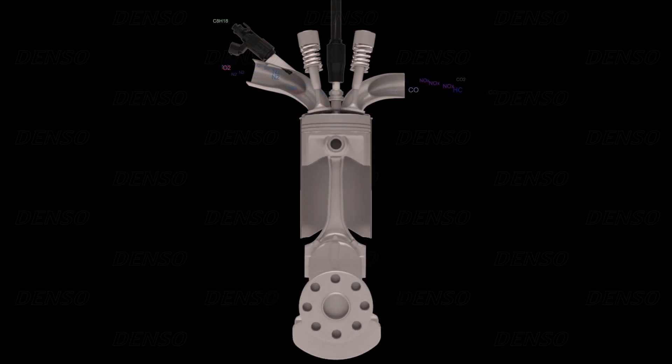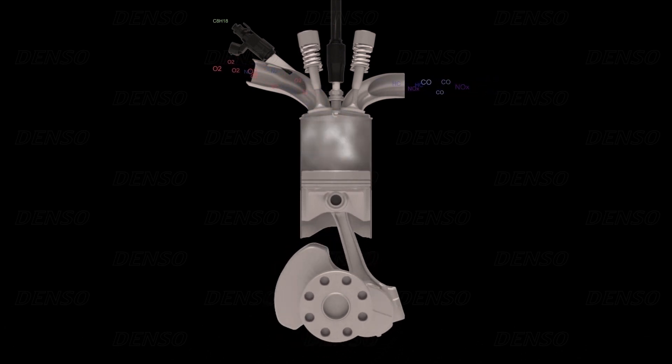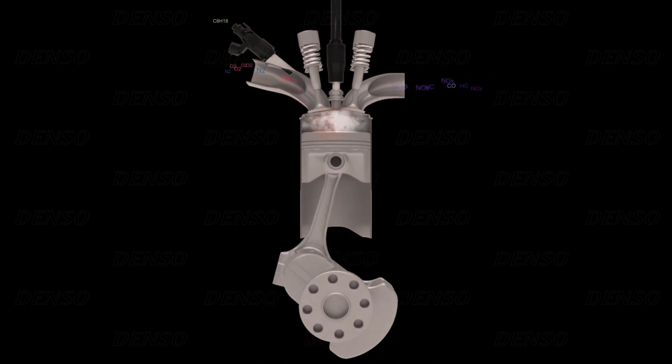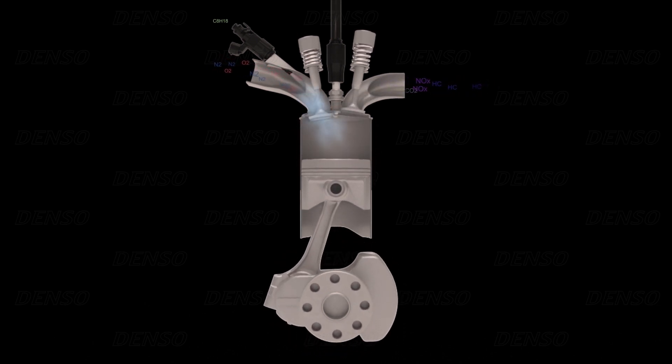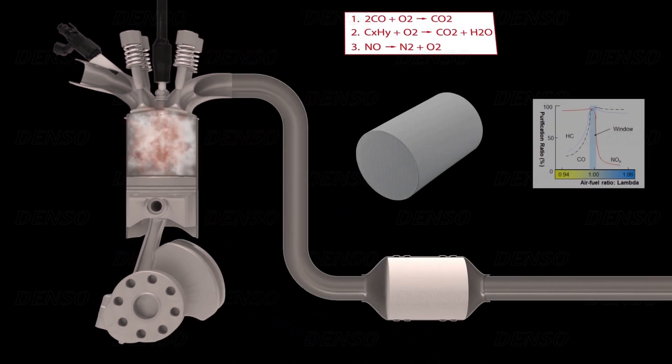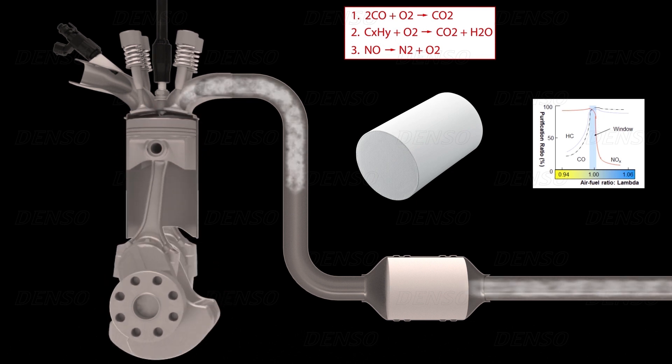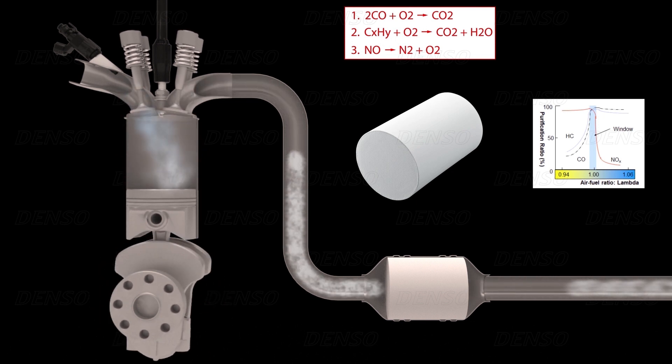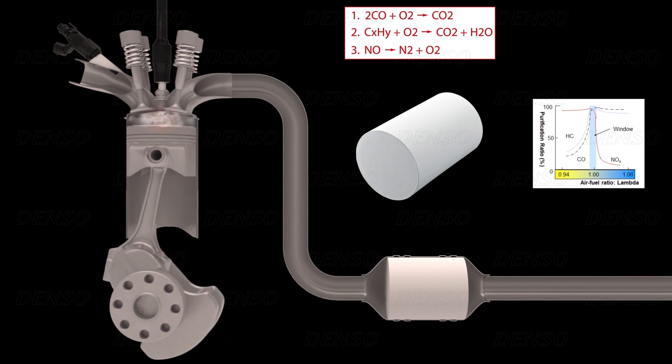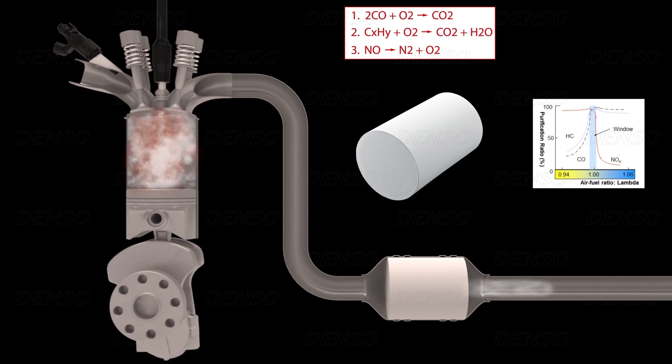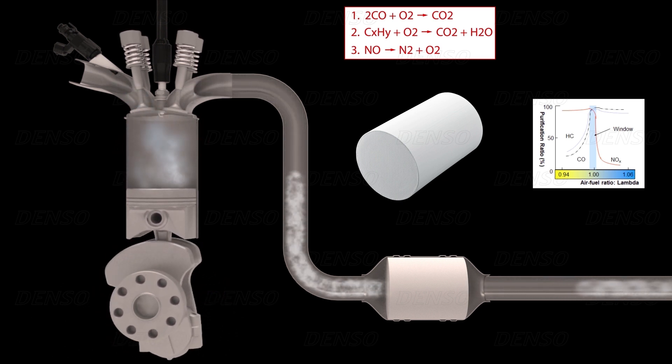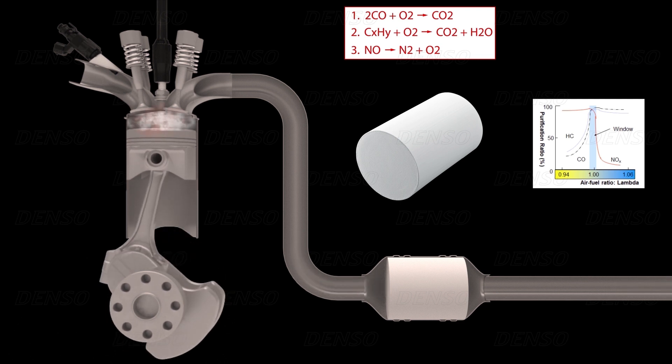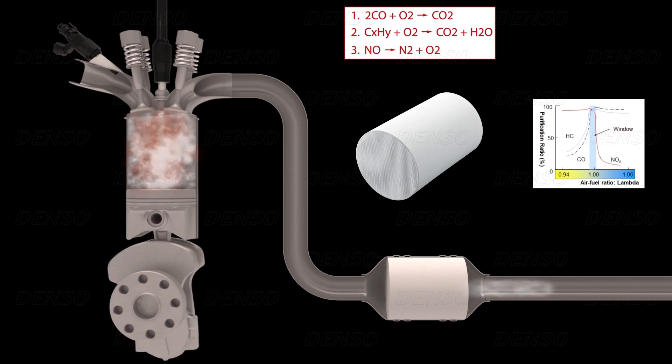Catalytic converters use complex chemical reactions that convert the harmful emissions into less harmful substances. Because the catalytic reactions of each of these substances require different ideal circumstances, they never reach 100% purification at the same time. Therefore, realistic targets are reached by compromising to an overall purification rate of 95% for these three pollutants. For this reason, it is most important that air-fuel ratio of the mixture going into the engine remains as close to lambda-1 as possible.